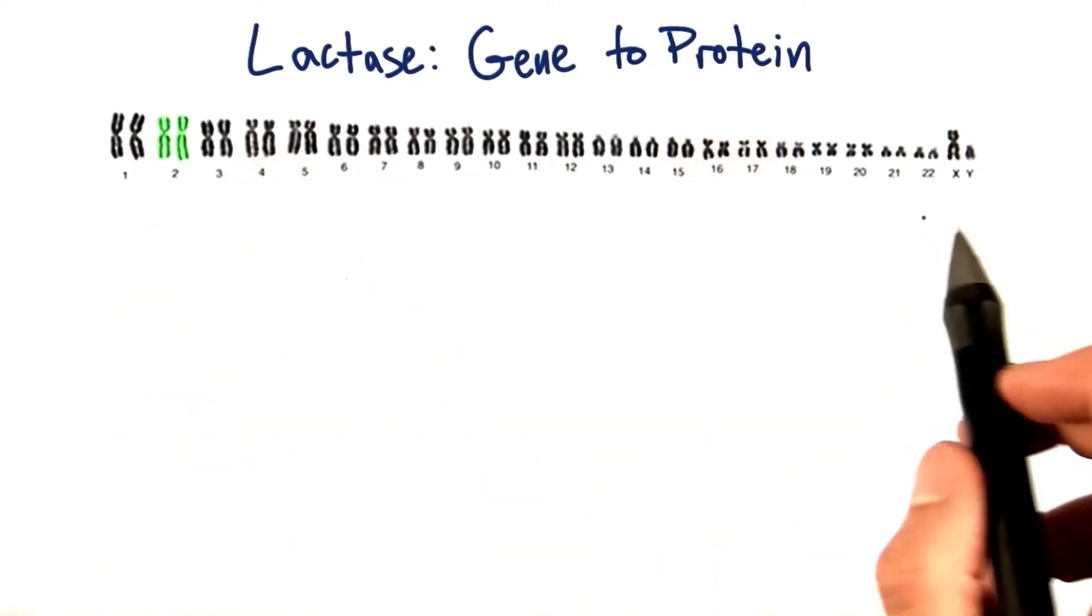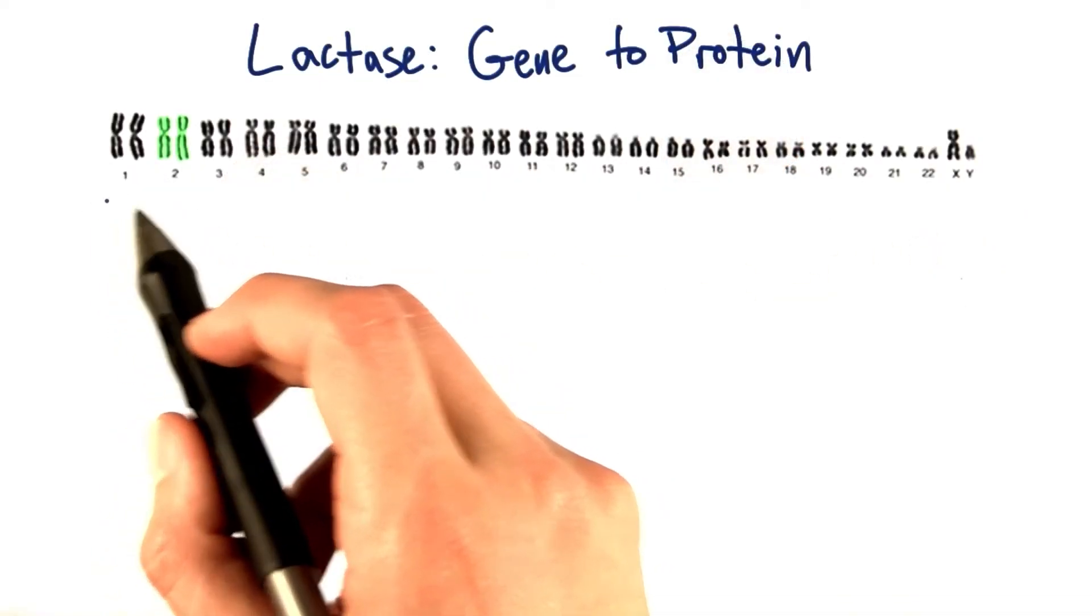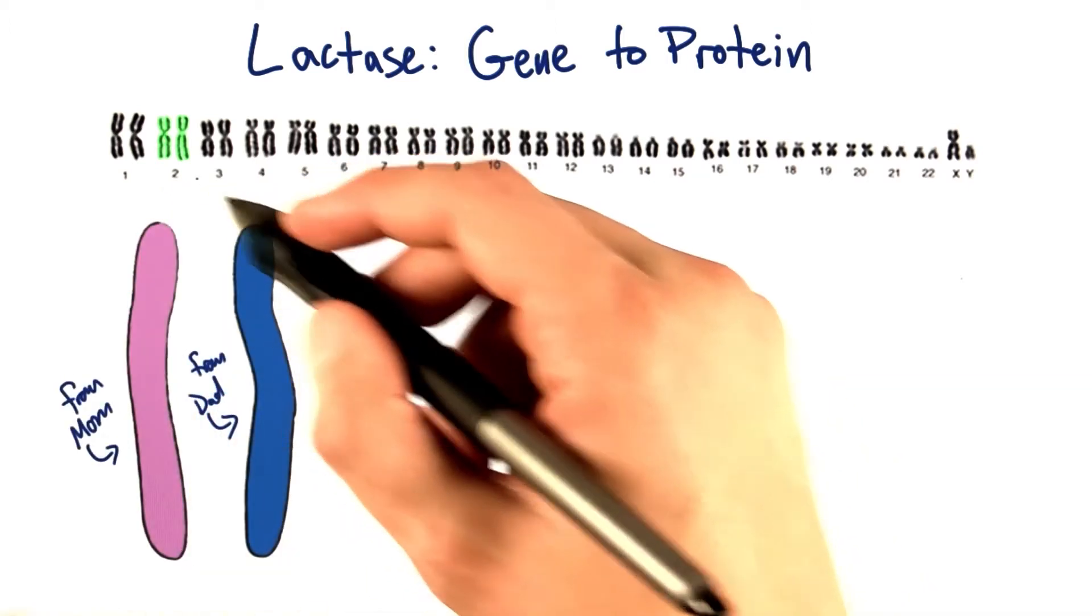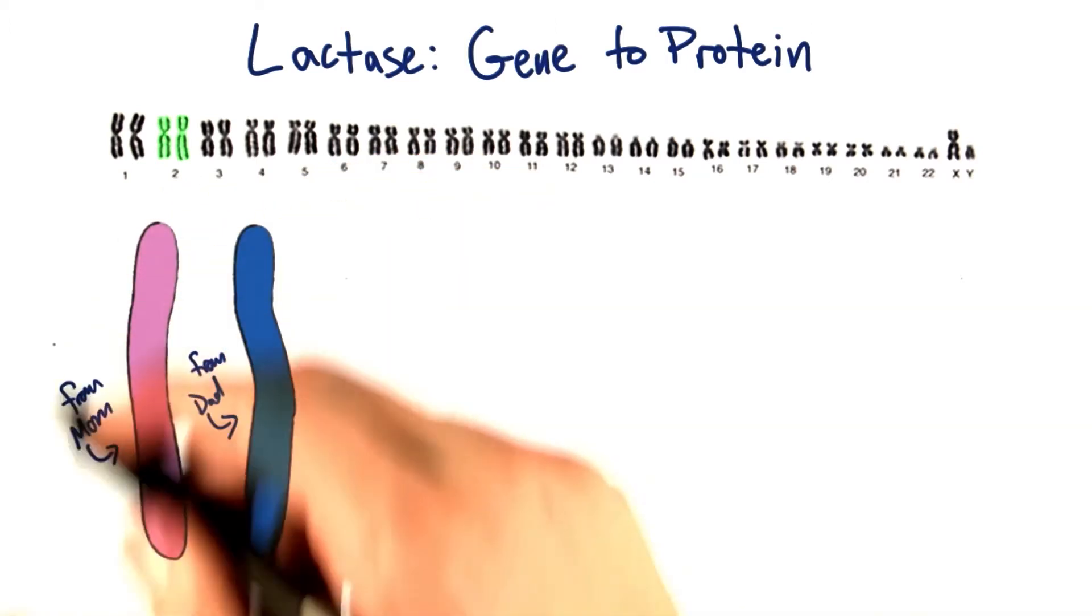If we search all across the human genome for the lactase gene, we'll find it here on chromosome two. Now let's zoom in on chromosome two just a little bit and we can see what we'd imagine it would look like.